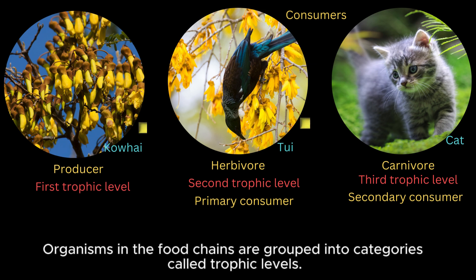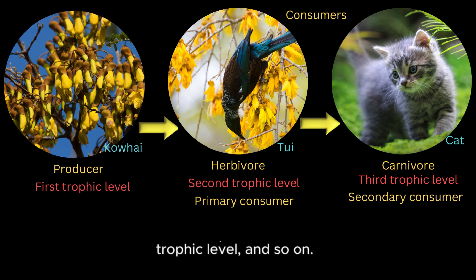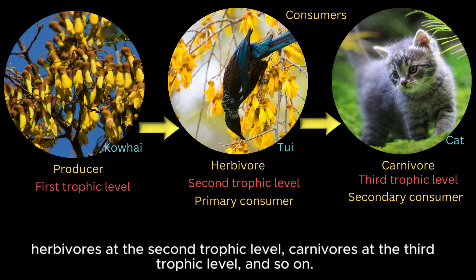Organisms in food chains are grouped into categories called trophic levels. These levels are divided into producers at the first trophic level, herbivores at the second trophic level, carnivores at the third trophic level, and so on.